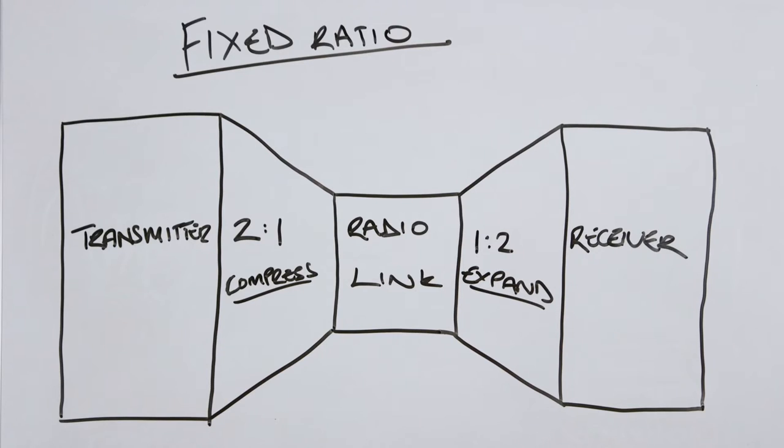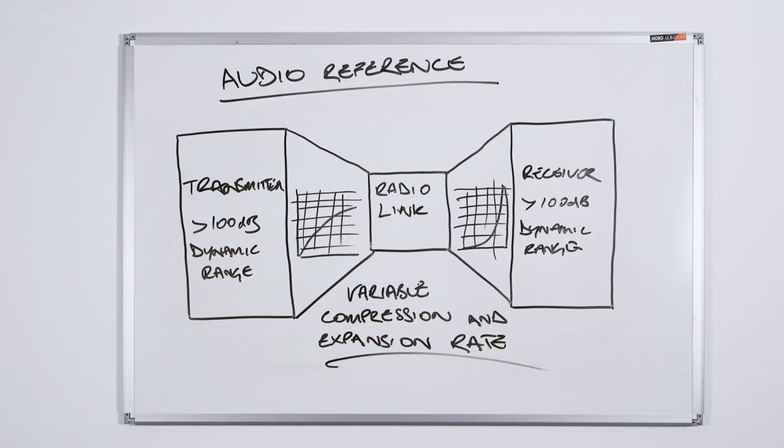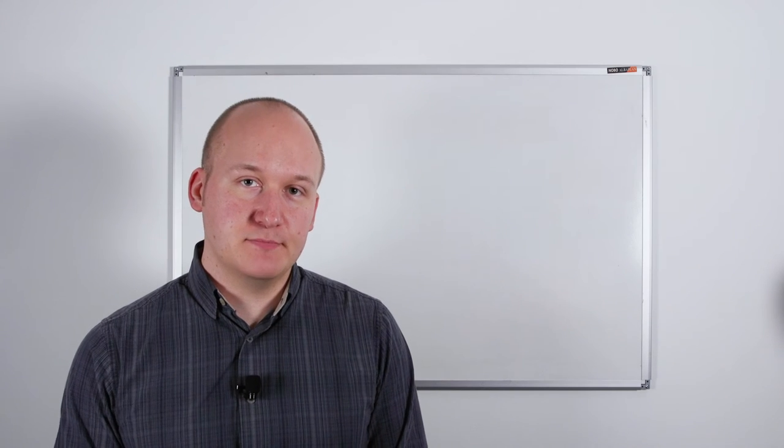Low tier systems use what's known as fixed ratio companding, but once we get into the mid to high tier systems we start using audio reference companding and today we're just going to cover the differences between the two methodologies.